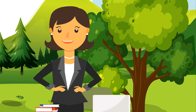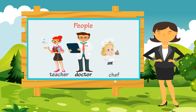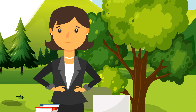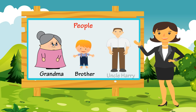There are many people around us. We identify them with certain names: teacher, doctor, chef. People in our family are also identified with some names. Grandma, brother, uncle Harry are examples of nouns which are people.